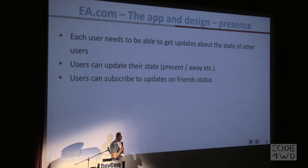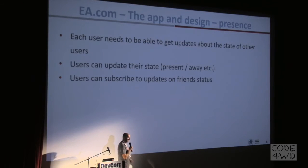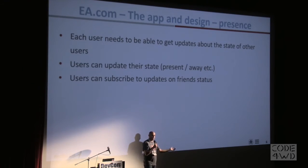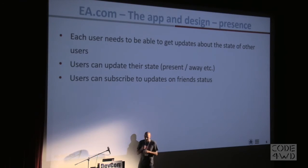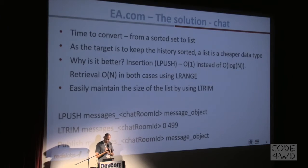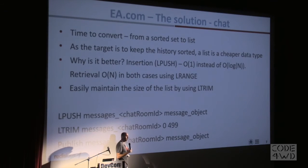The second feature was presence — a simple concept where you have a user with friends, and you want to know if those friends are online, offline, or away, and receive updates when one of them comes online.